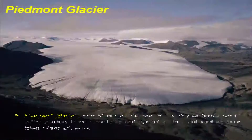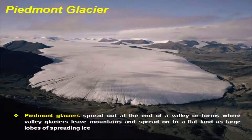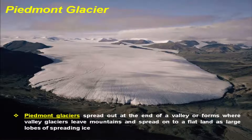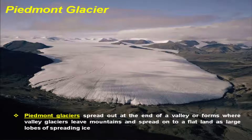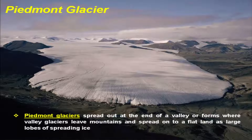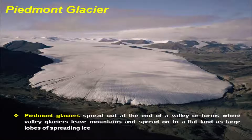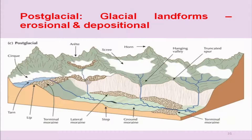Piedmont glaciers spread out at the end of the valley, or form where valley glaciers leave mountains and spread on flat land as large lobes — similar to what we were learning in fluvial landscape. Looking at more glacial landforms, let us see examples of a horn and related features in the next slide.